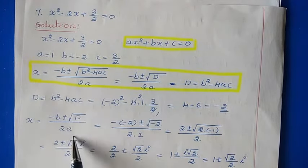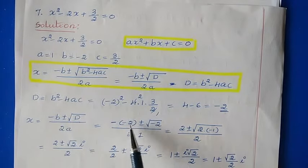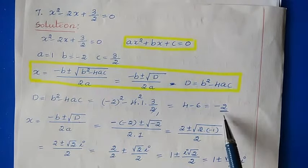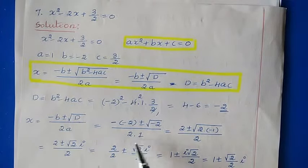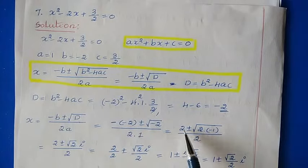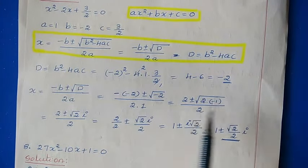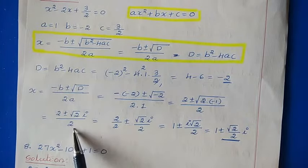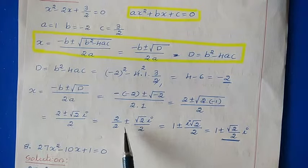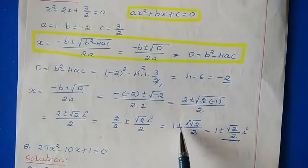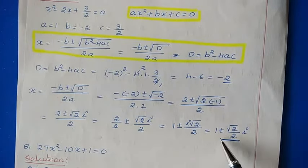Using x = (-b ± √d) / 2a: x = (-(-2) ± √(-2)) / (2 × 1) = (2 ± √(-2)) / 2. We write √(-2) = √(2 × -1) = √2 · i. So x = (2 ± √2 · i) / 2 = 2/2 ± (√2/2)i = 1 ± (√2/2)i. This is the solution to problem 7.